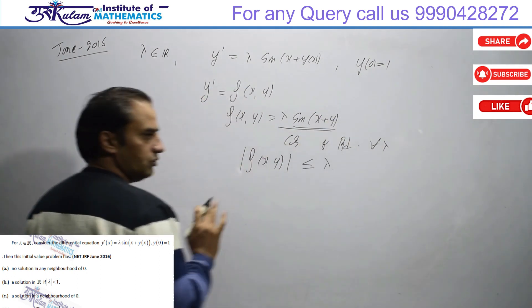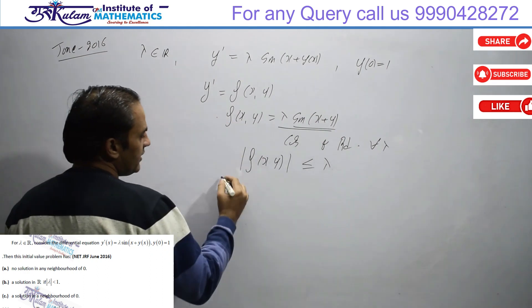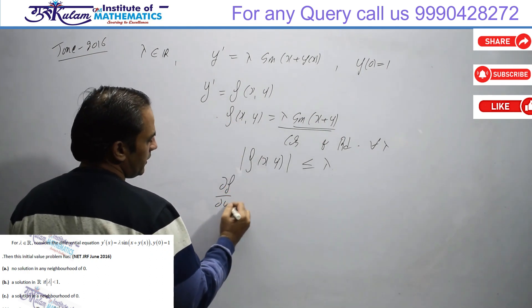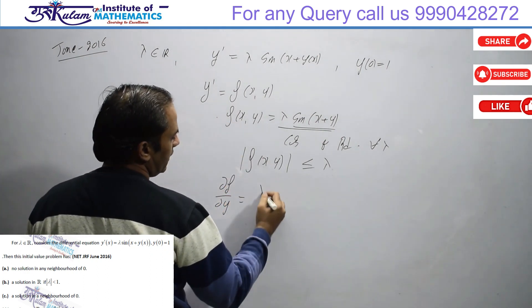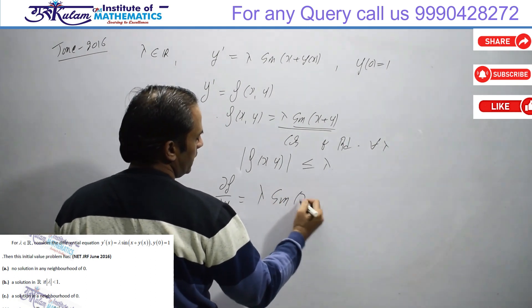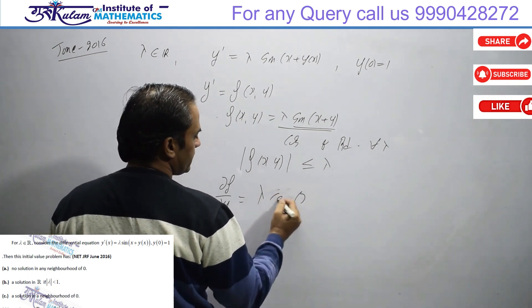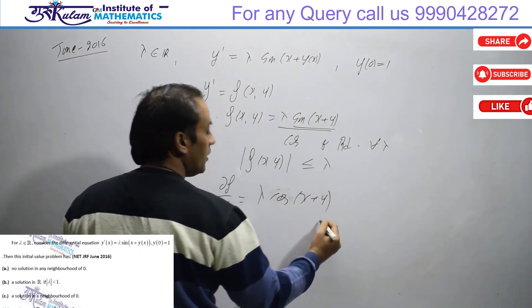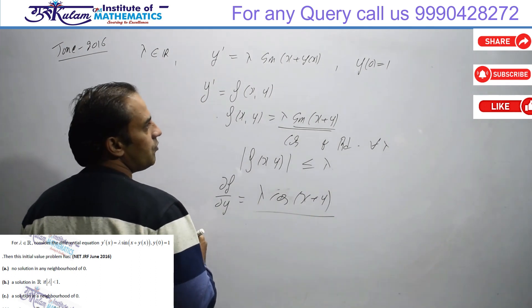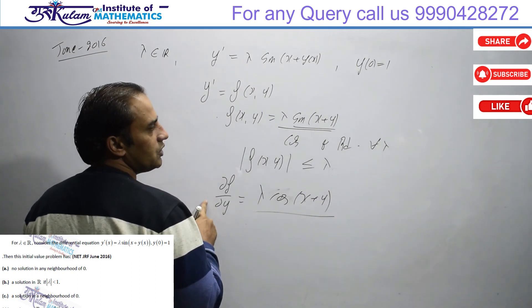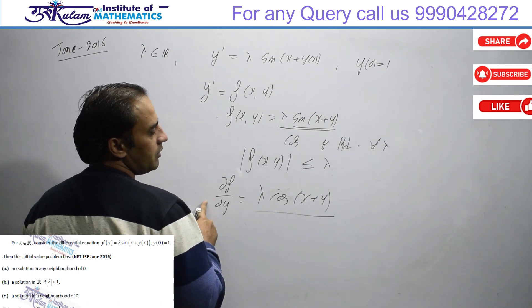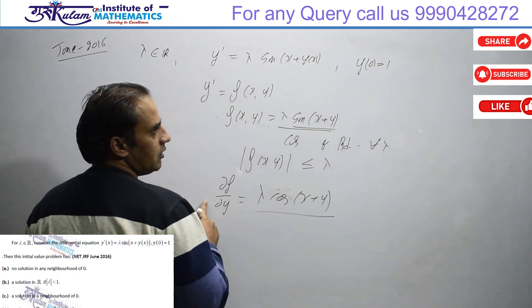From existence theorem, solution exists. And if I take partial derivative with respect to y, I get lambda times cos(x+y), which is also continuous and bounded. So this function is Lipschitz continuous.